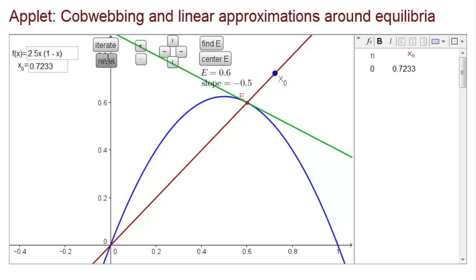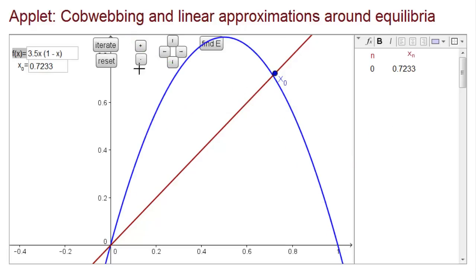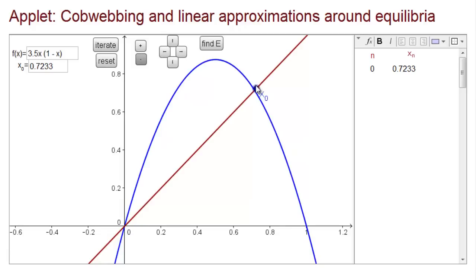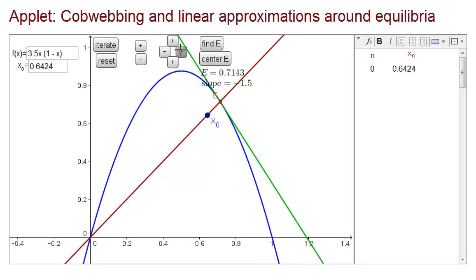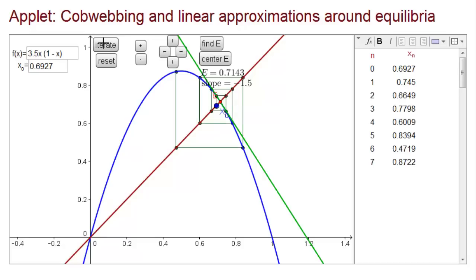Let's increase the coefficient even further to 3.5. Our upper equilibrium got larger again — it's 0.7-something. And now the slope is negative 1.5. Since this slope is less than negative 1, the equilibrium is unstable and spirals outward.